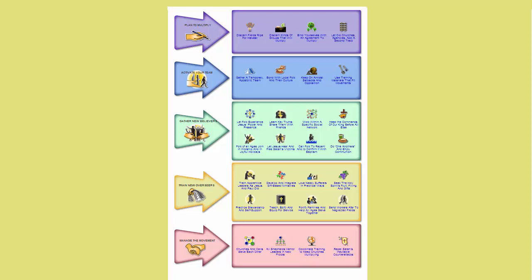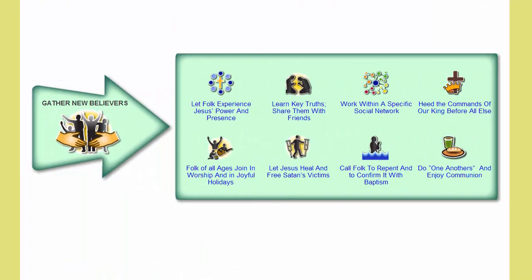Suppose a church planter replied, 'We have begun to gather new believers. How can we help them experience the reality of Jesus in their midst?' In this case, you would come to the third phase, gather new believers. Then look over the available activities. In this case, we would click on the activity labeled 'Let Folk Experience Jesus'